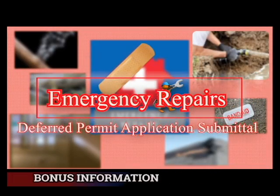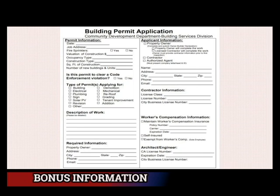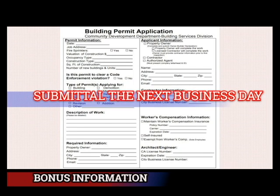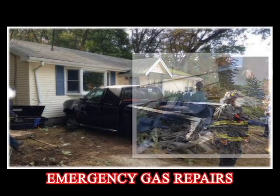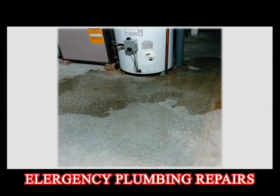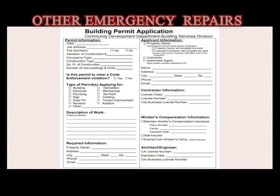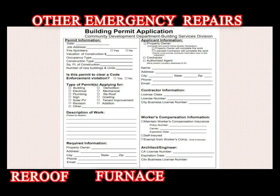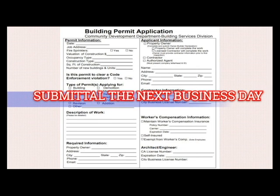Emergency repairs are allowed to be made prior to the submittal of a building permit application, on the condition that the permit application is submitted the next business day. Examples include emergency electrical repairs due to weather-related damages, emergency gas repairs due to mechanical damages, or if a water heater springs a leak over the weekend. There may be other emergency repairs included by your local building department, such as emergency re-roof, furnace, plumbing, or water pipe repairs — but consult with your local building department for confirmation. Conducting emergency repairs requires submittal of the building permit application on the next business day.